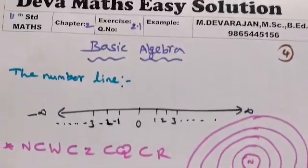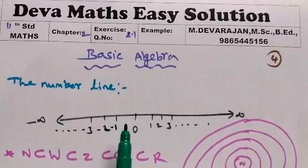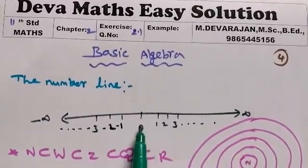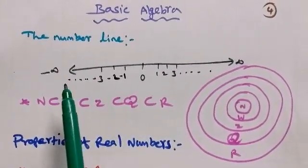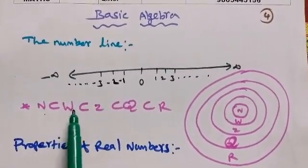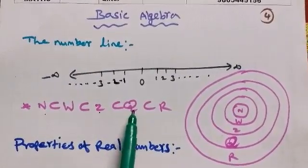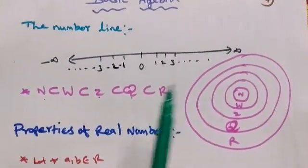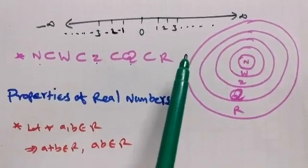The number line starts at 0 in the center, with positive numbers to one side and negative numbers to the other. The number types include whole numbers, integers, rational numbers, and complex numbers.